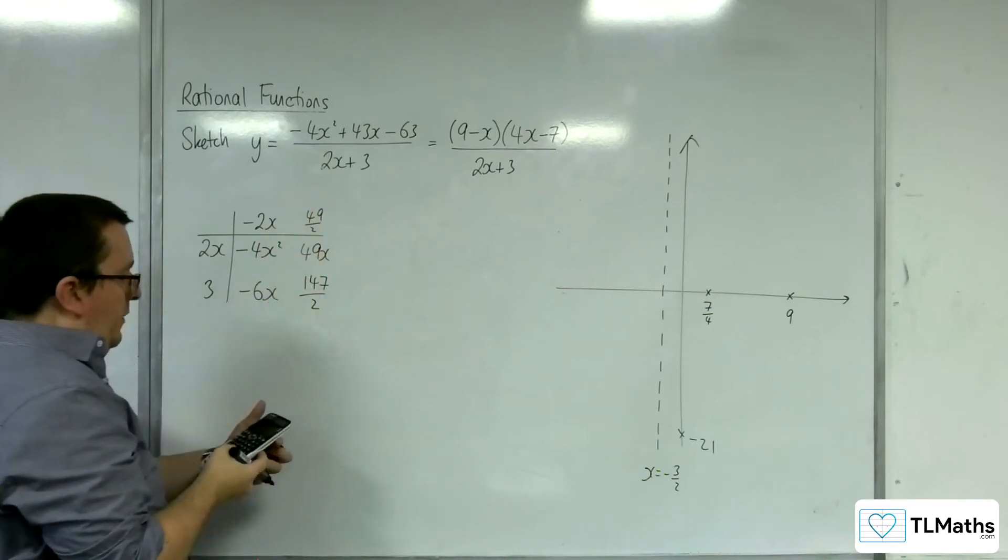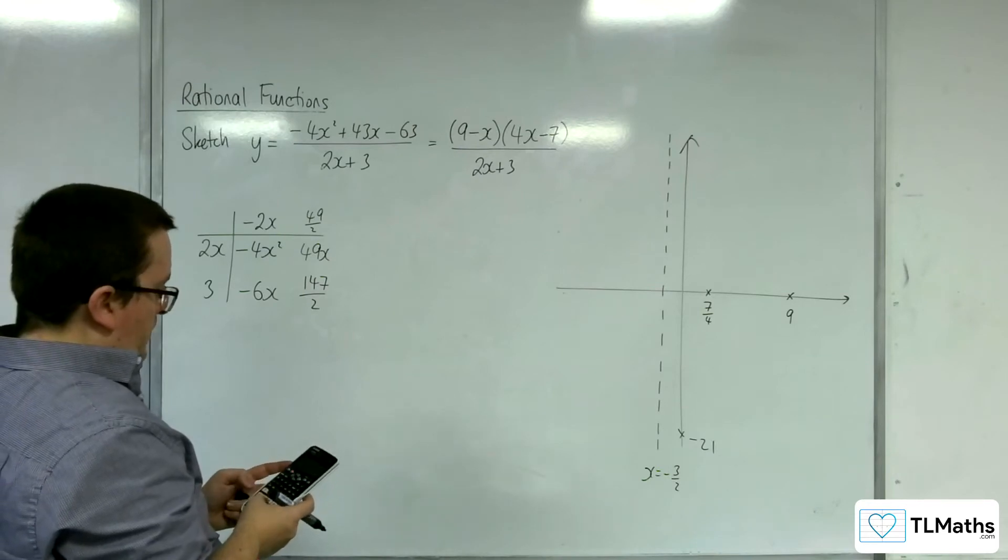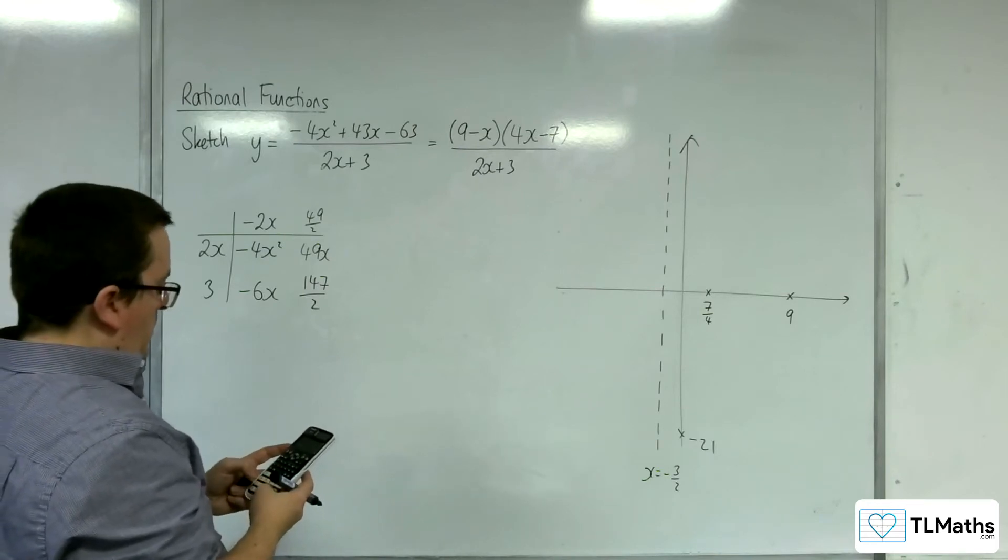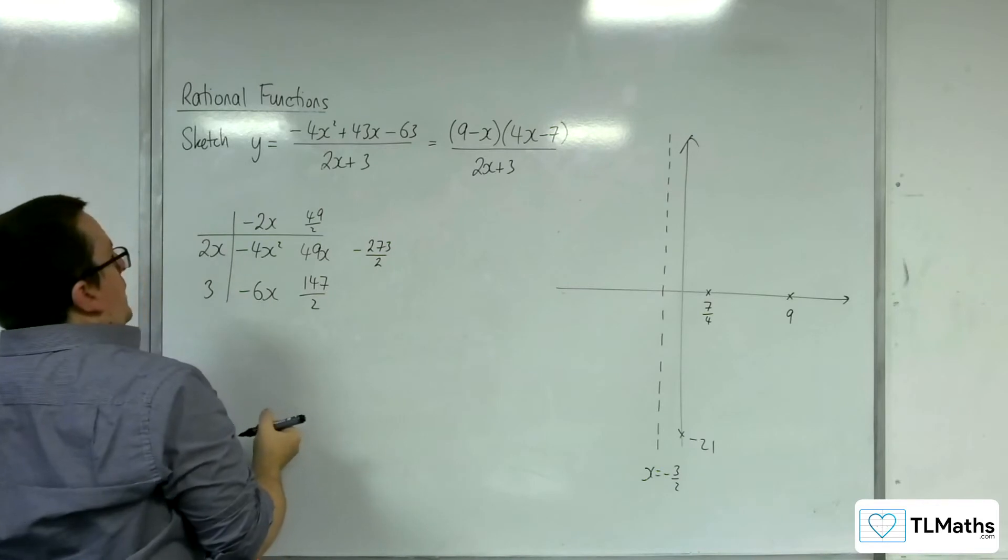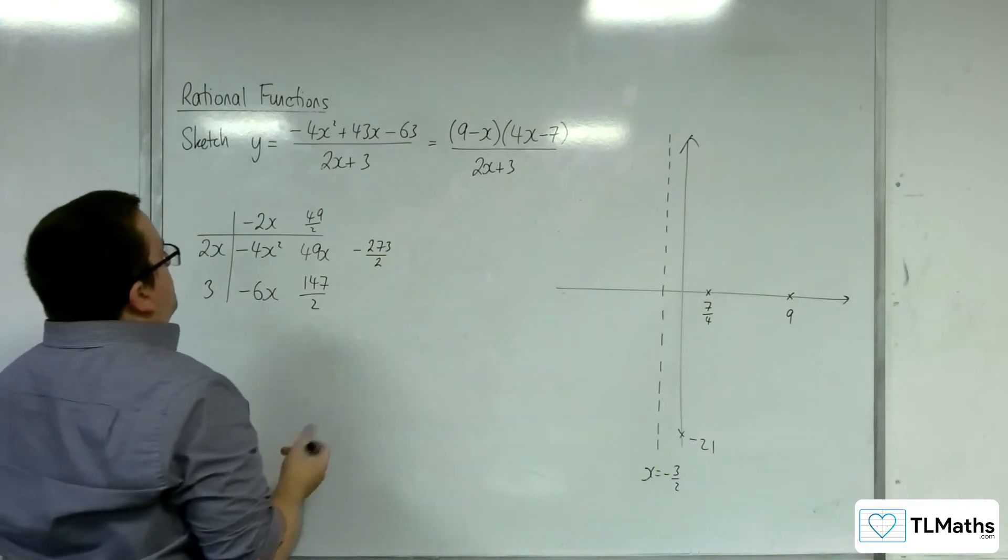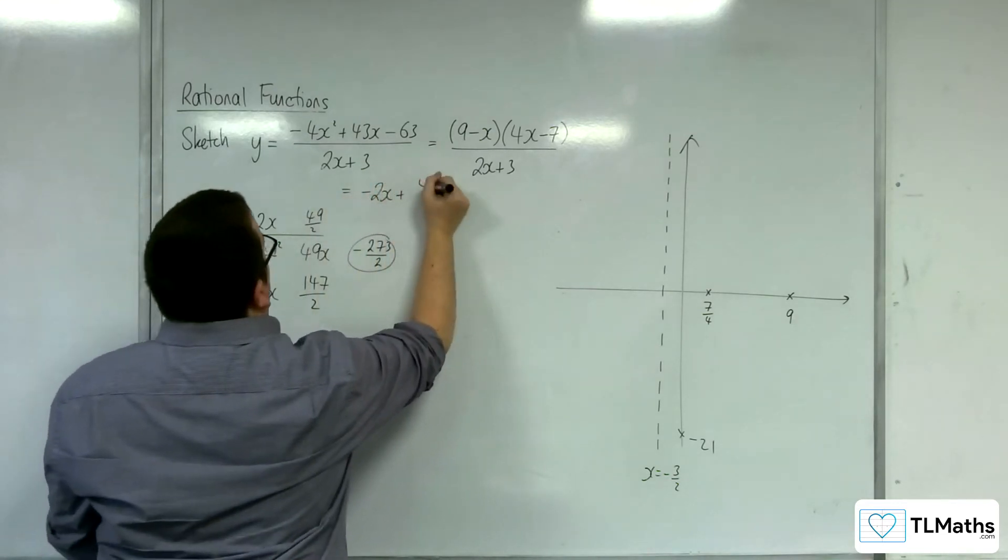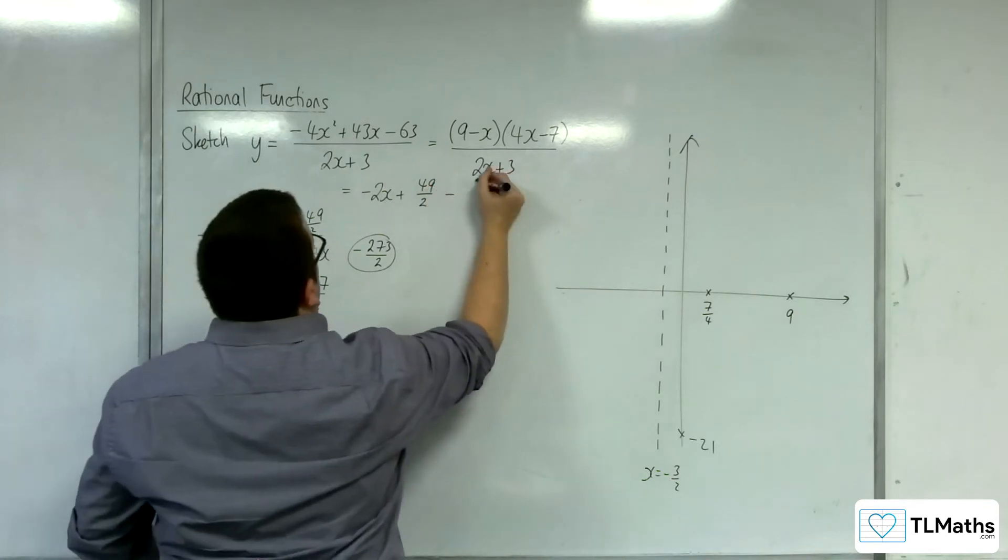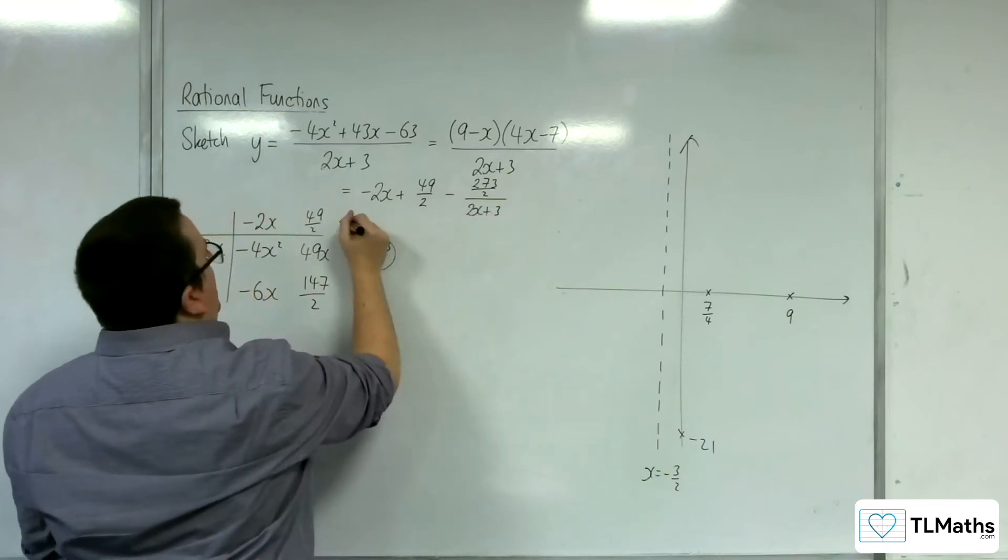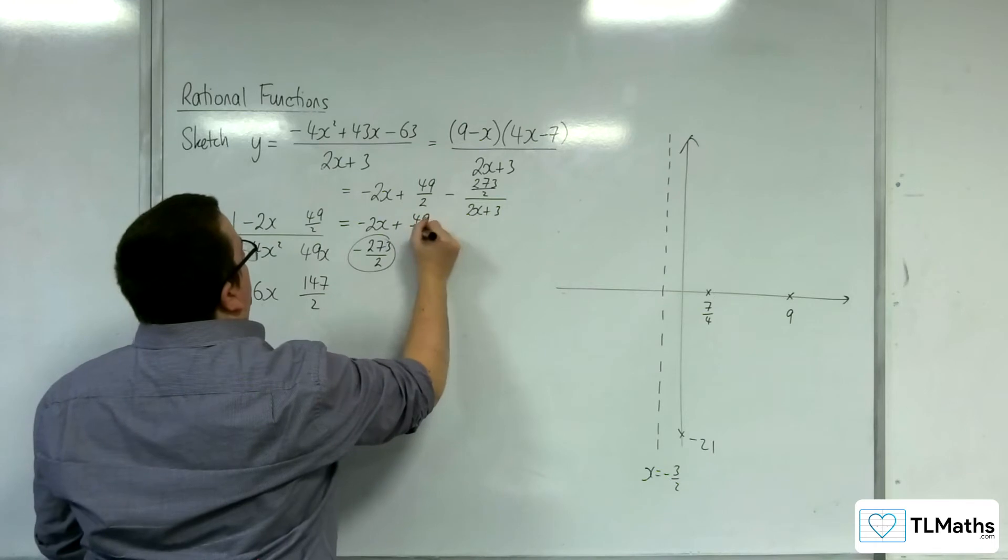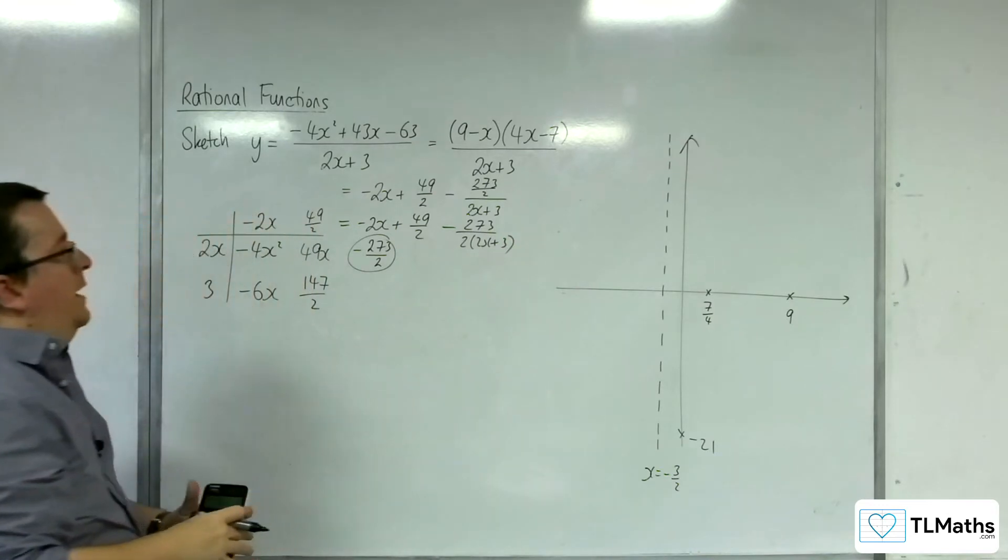And we need minus 63. OK, so I would need to take away minus 273 over 2 in order to get there. OK, so that's my remainder. And so this is equal to minus 2x plus 49 halves take away 273 over 2 over 2x plus 3. Now you can write that like this if you prefer. OK, OK, have it like that.